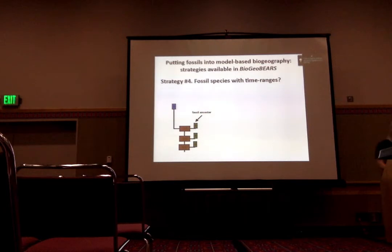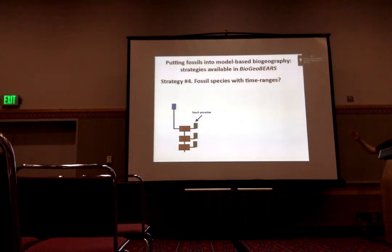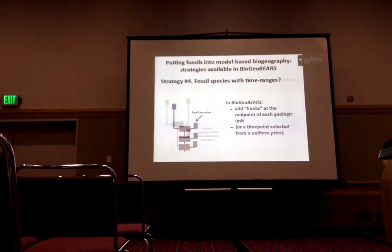What if you have a fossil species with a time range spanning several geologic periods? The way I've decided to deal with this is to add little hooks throughout the time range — perhaps at the midpoint of every geologic period, since fossil dates are typically done by stratigraphic zones. You could also randomly place those with a uniform distribution within that range, repeat that a bunch of times to get a sample of trees, and then run your biogeography analysis on that sample.